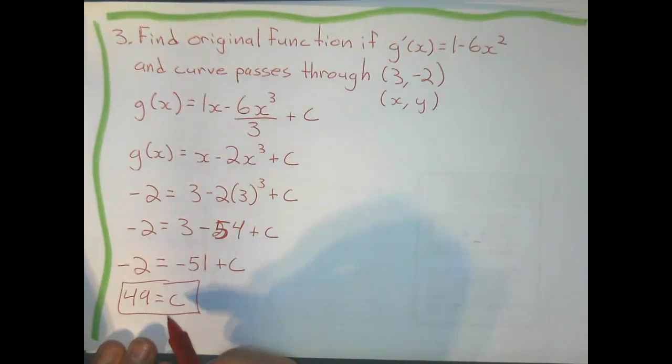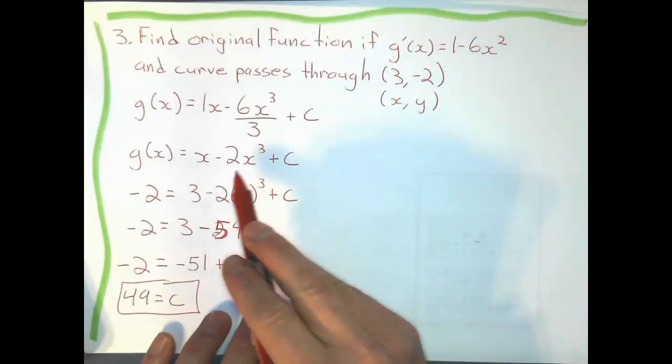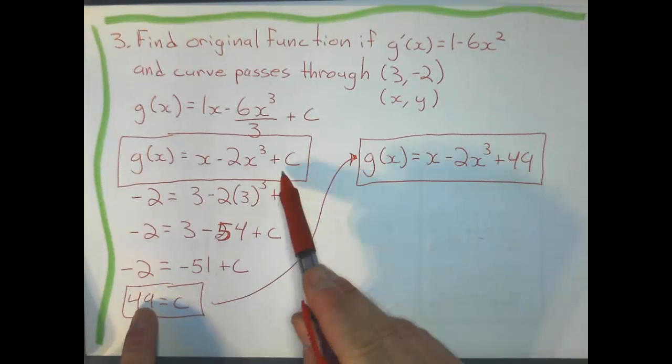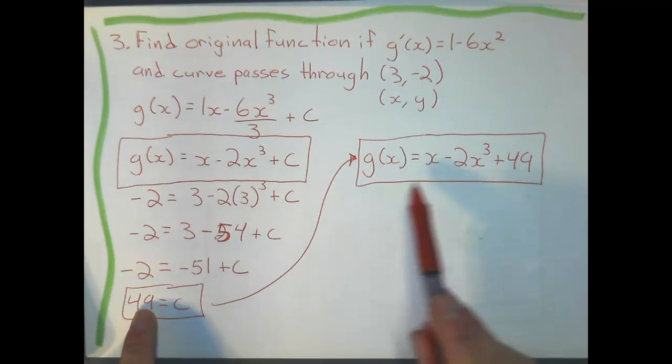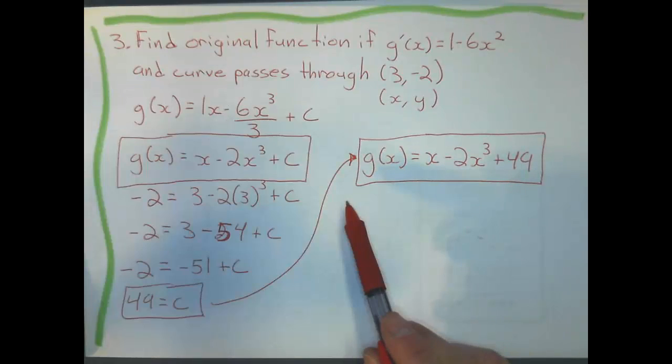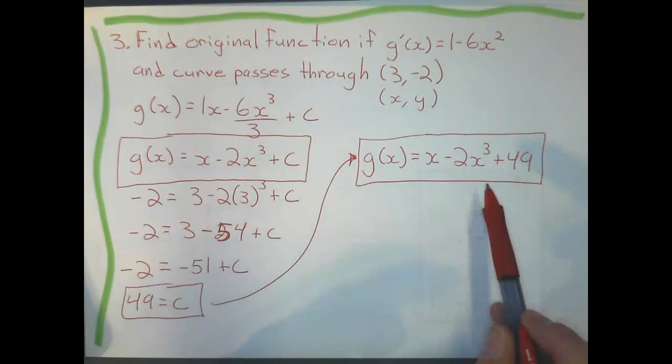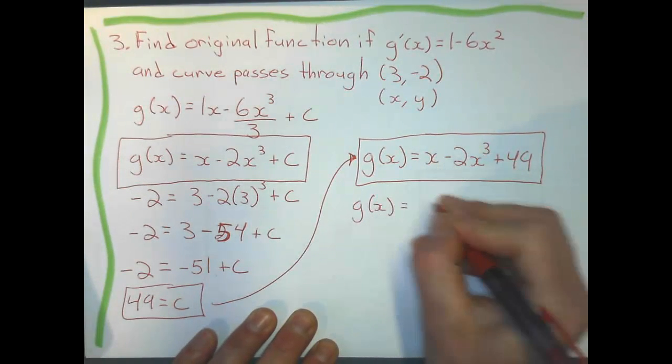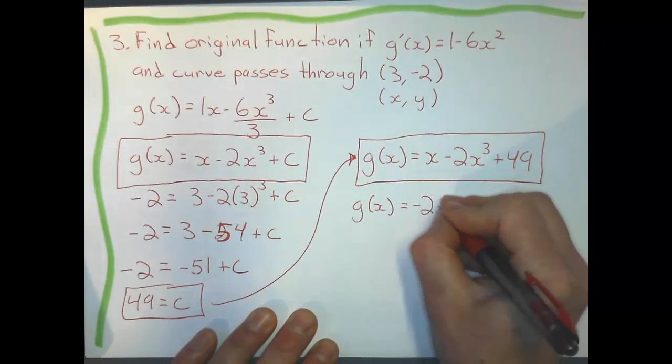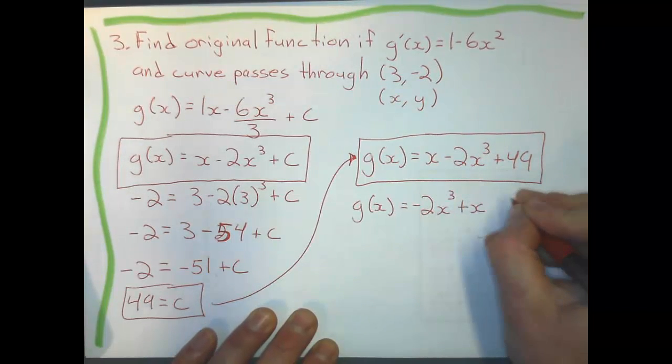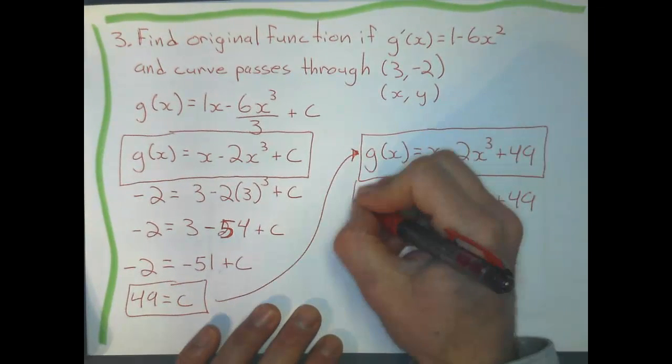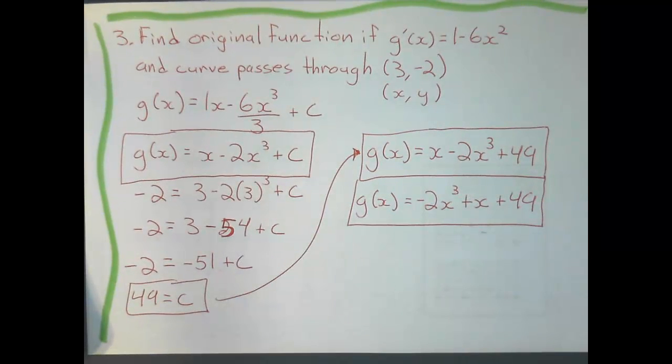Now I rewrite my equation. Don't forget, this is the original equation right here. So we substitute that 49 in for c, and that's fine. You'll get full marks for that. But usually we write polynomials in descending order of x, so we might want to write it with the x³ term first. Even though it's negative, -2x³+x+49 just looks a little bit cleaner. Either of those are acceptable. Thank you very much.